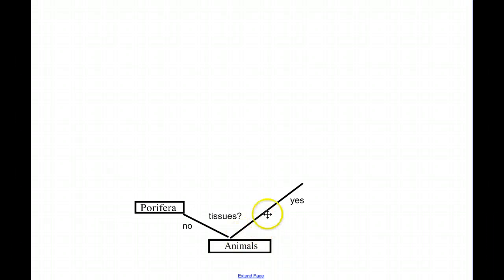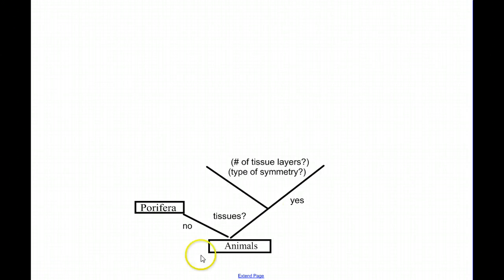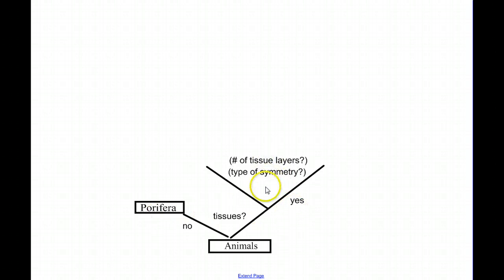Now the branch of animals that have true tissues, we're going to subdivide again, based upon two different things: one, if they have tissues, how many layers of tissues do they have? And two, what type of symmetry do they show? We need to stop here and investigate what we mean by number of tissue layers and symmetry.